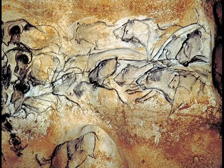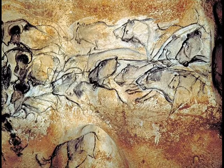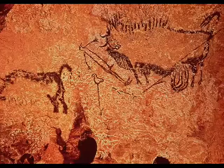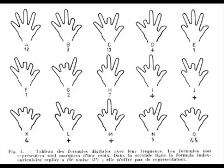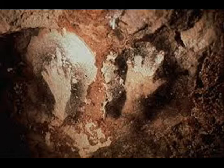Almost all cave art depicts naturalistic images of animals. Representations of humans are very rare. However, many positive and negative images of human hands were created. Some of these hand prints and stencils have missing digits. Do you think these apparent mutilations were the result of missing fingers lost to accident or frostbite, or are they simply illusions produced by the intentional bending of fingers, providing a written sign language?